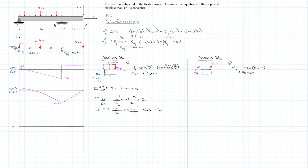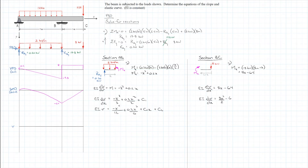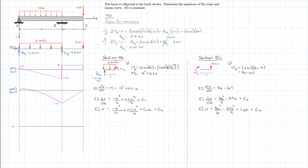Doing the same two successive integrations for section BC: EI d²v/dx² equals 8x minus 64. Integrating once: EI dv/dx equals 8x² over 2 minus 64x plus constant C3. Integrating again: EI v equals 8x³ over 6 minus 64x² over 2 plus C3·x plus constant C4.